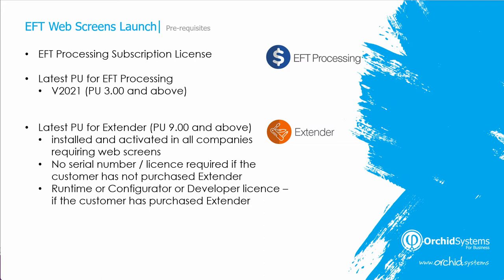Extender needs to be installed and activated in all companies requiring the EFT web screens. You do not need to purchase extender in order to run EFT web screens. But if the customer does have a runtime or configurator or developer license already, then they are able to run EFT web screens as long as they have an EFT subscription license and PU 9 of extender has been installed and activated in the appropriate companies. And for system manager, you need to be on PU 2 and above for version 2021.